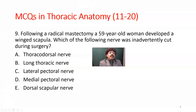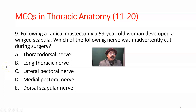Question number 19. Following a radical mastectomy, a 59-year-old woman developed a winged scapula. Which of the following nerves was inadvertently cut during surgery? The winged scapula is related to the serratus anterior muscle, and the nerve supply of serratus anterior is the long thoracic nerve. So the long thoracic nerve is the answer.